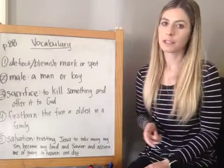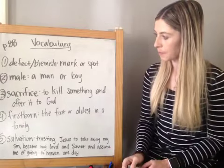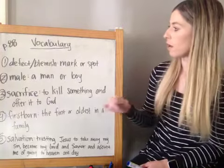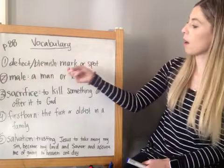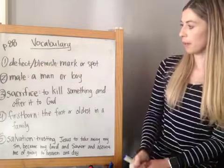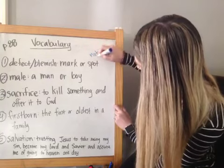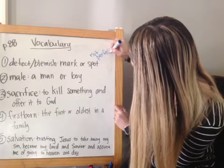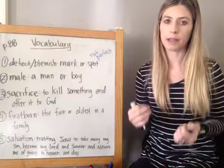First, let's go over our vocabulary words for this week — they help paint the picture of the Passover. Our first word is defect or blemish, which means mark or spot. If an animal has a defect or a blemish, it means they're not perfect. There's a mark or a spot on them — something not exactly perfect about them.